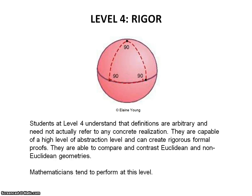Level 4 is Rigor. Students at this level understand that definitions and properties are arbitrary and need not actually refer to any real-world phenomenon. Students are capable of a high level of abstraction and can create rigorous formal proofs. They are able to compare and contrast Euclidean and non-Euclidean geometries. Mathematicians tend to perform at this level, and this is what is expected at graduate school.